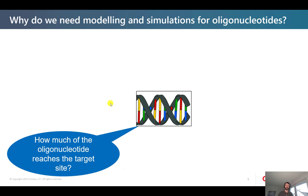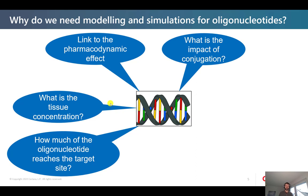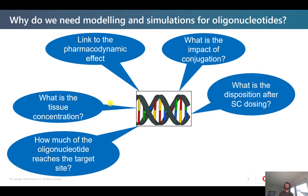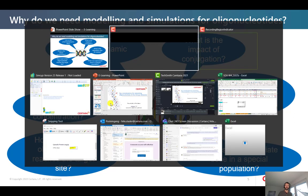Why use modeling and simulation for oligonucleotide drugs? We can predict how much of the oligonucleotide reaches the intracellular space and the target site. We can simulate tissue concentration, link it to a pharmacodynamic effect, and look at the impact of conjugation. We can examine disposition after subcutaneous dosing, and also look at special populations with limited clinical data, such as people with renal or hepatic impairment. With this short introduction, we will now switch into the simulator.